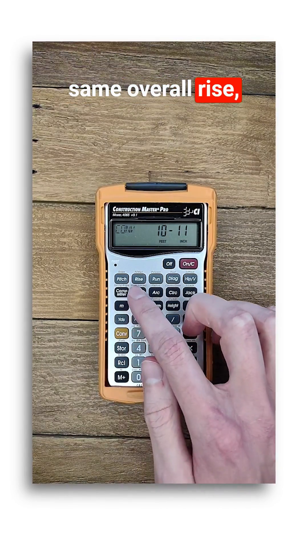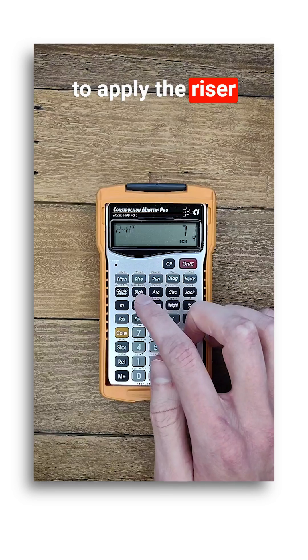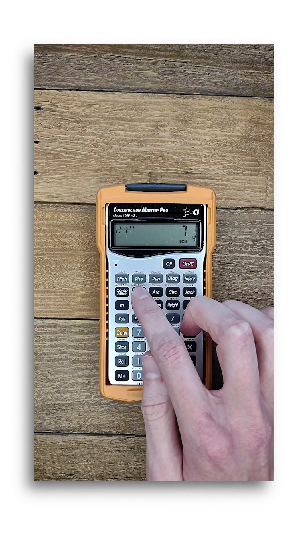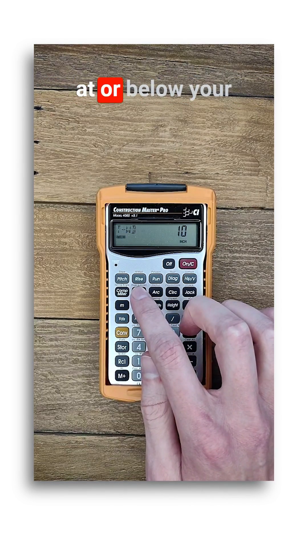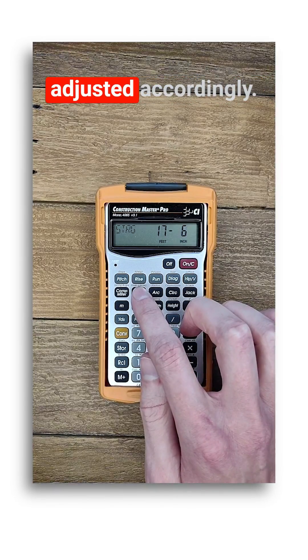Starting with the same overall rise, push convert before the stair button to apply the riser limited function. Now your riser will be at or below your desired height, and all of your other stair measurements will be adjusted accordingly.